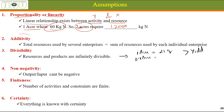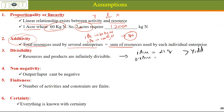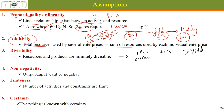The second assumption is Additivity: total resources used by several enterprises equal the sum of individual requirements. For example, one acre of wheat requires 60 kg of nitrogen and one acre of paddy requires 120 kg, so the total requirement is 180 kg. There is no carry forward — you simply add the total resource count by summing up the resources used by individual enterprises.